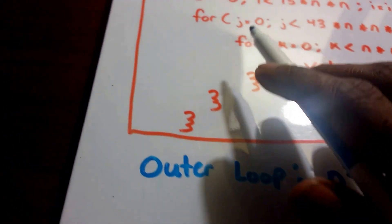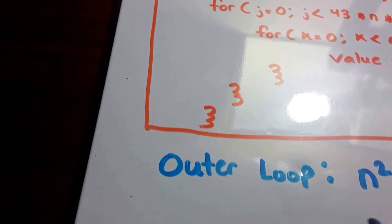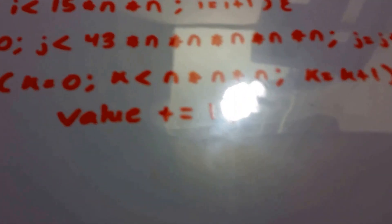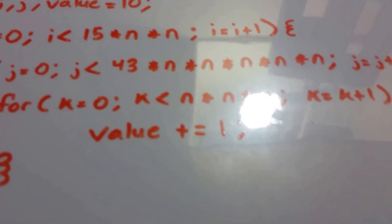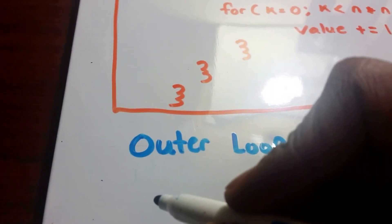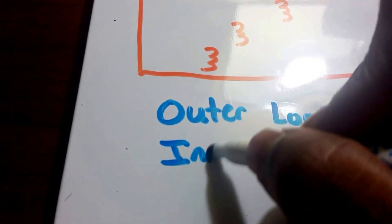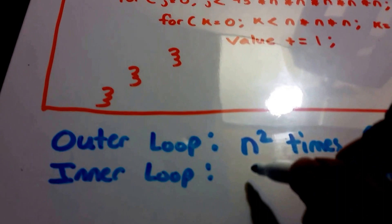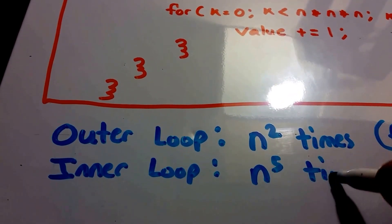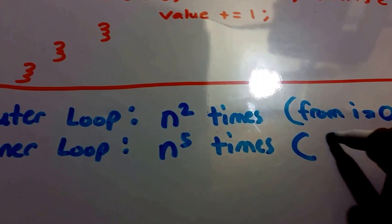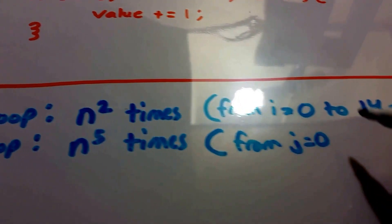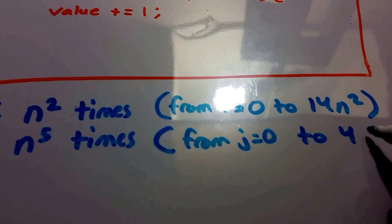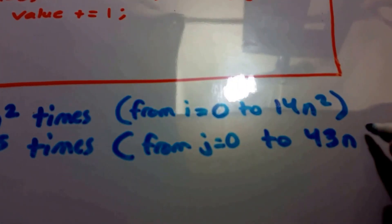Now let's look at the inner loop — the second loop. And it iterates n to the power of 5 times. So you can see that there. The inner loop runs n to the fifth times, and the reason why is because it runs from j equals 0 to 43 times n to the fifth power.